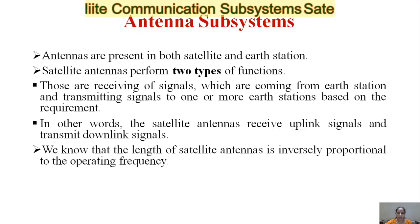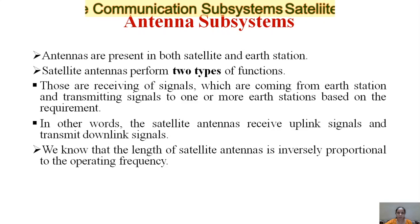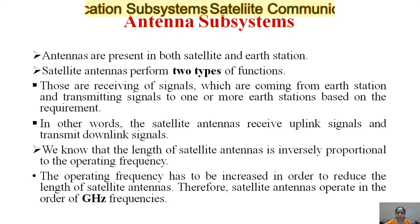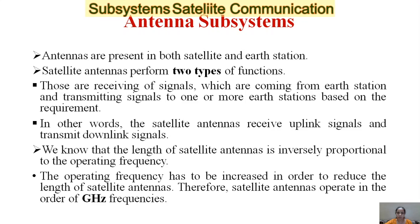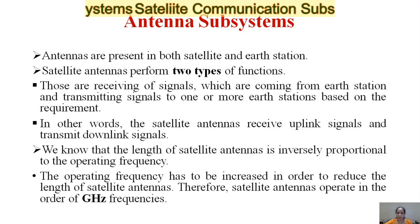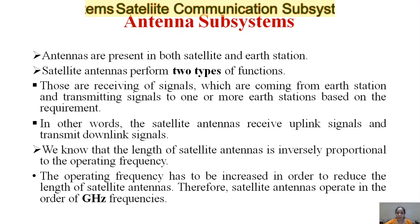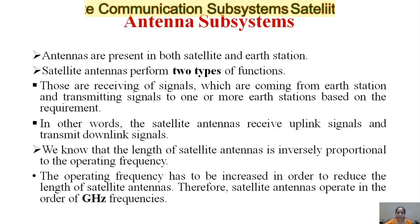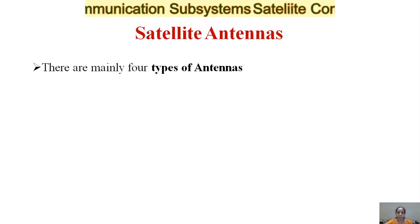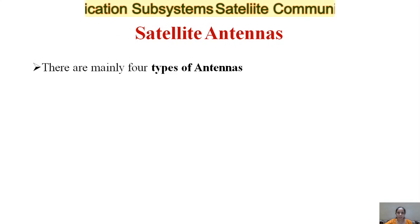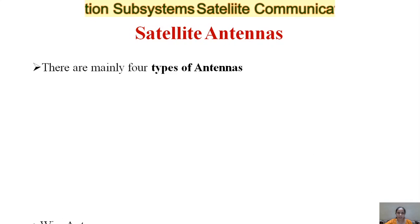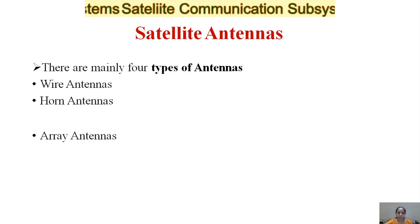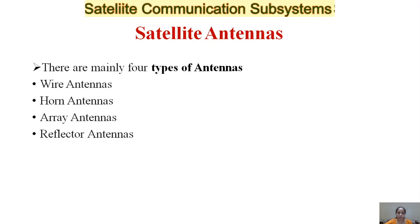The length of satellite antennas is inversely proportional to the operating frequency, so the operating frequency must be increased in order to reduce antenna length. Therefore satellite antennas are operated in the range of gigahertz frequencies. There are four types of satellite antennas: wire antennas, horn antennas, array antennas, and reflector antennas.